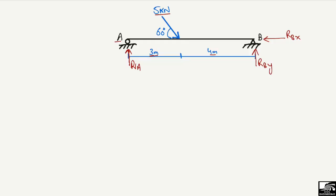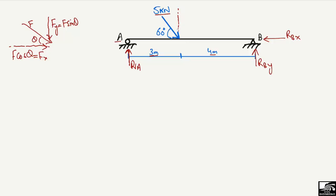When there is an inclined load acting on the beam, it always has two components from physics: one horizontal and one vertical. The vertical component is F_Y = F·sin(θ) and the horizontal component is F_X = F·cos(θ). Similarly, for our 5 kN inclined load, the vertical component will be 5·sin(60°) and the horizontal component will be 5·cos(60°).